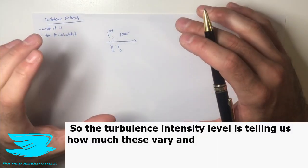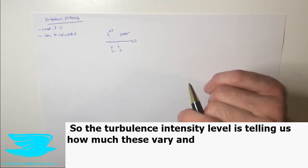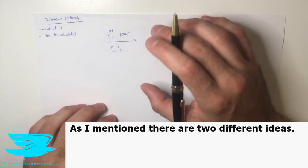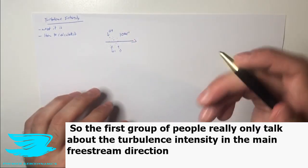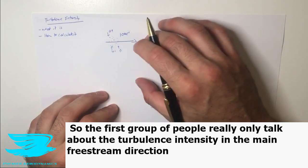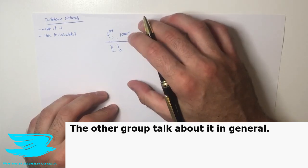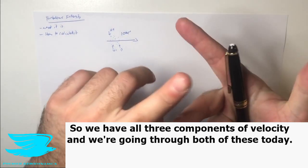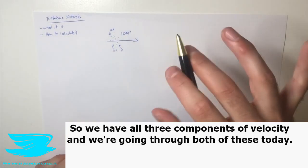So the turbulence intensity level is telling us how much these vary. And as I mentioned, there are two different ideas. So the first group of people, they say that we really only talk about the turbulence intensity in the main freestream direction. The other group talk about it in general. So we have all three components of velocity. And we're going through both of these today.